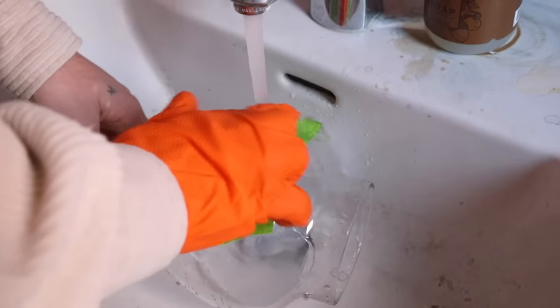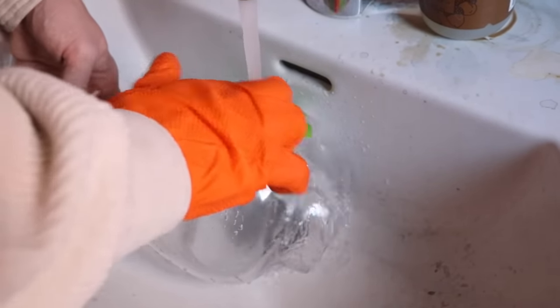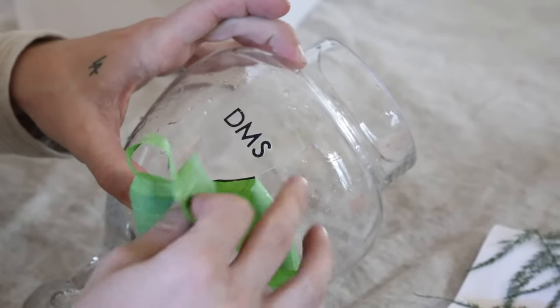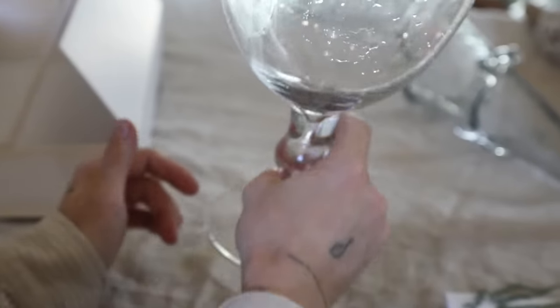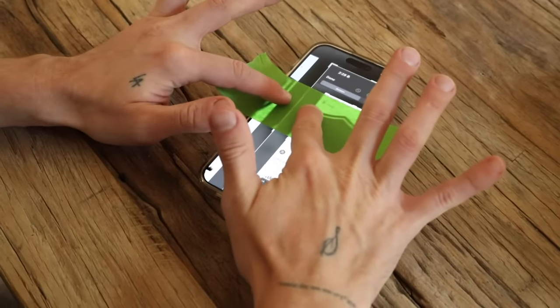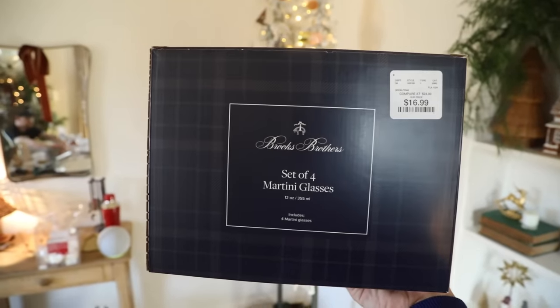I'm going in with the Armor Etch and applying a nice thick layer over the top of the surface. You're supposed to let this sit for about 30 minutes before washing it off. Do not judge the sink—this is our craft sink, so it's really dirty. I'm pulling off the tape and removing the D-M-S.